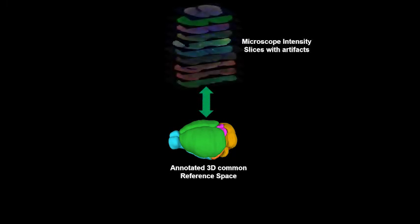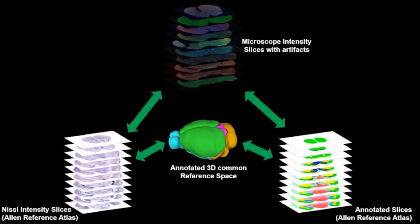However, this direct approach is extremely challenging because of histological artifacts in the microscopic slices. There are two other indirect ways of achieving this alignment: one through intensity atlas slices and another through annotated atlas slices.